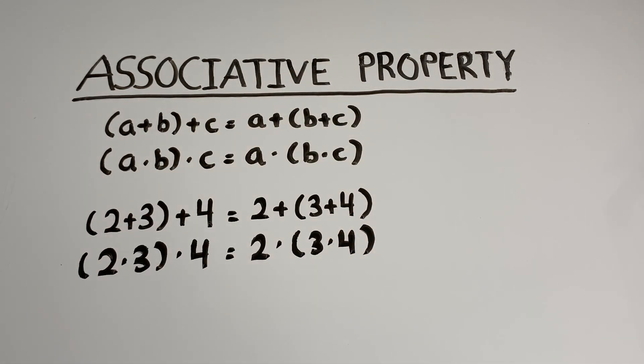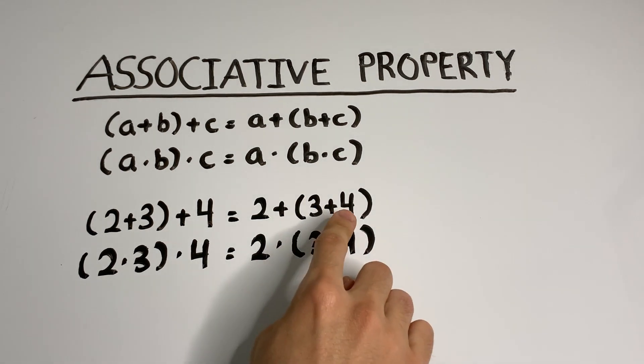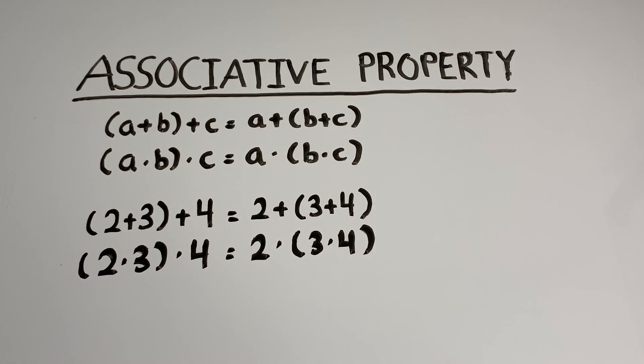We can see this with numbers because 2 plus 3, which is 5, plus 4 equals 9. That gives the same result as 3 plus 4 first, which is 7, plus 2, which is 9.